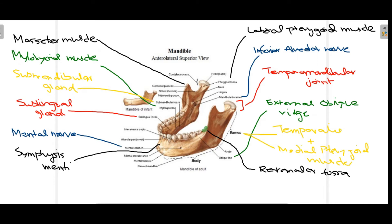Moving on towards the inside structures of the mandible — you can see a depression or groove-like structure known as the mylohyoid groove, through which the mylohyoid artery and mylohyoid nerve pass. Just anterior to that is a ridge-like structure known as the mylohyoid line, and on this mylohyoid line the mylohyoid muscle is attached.